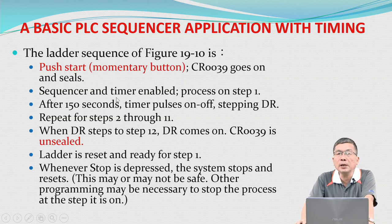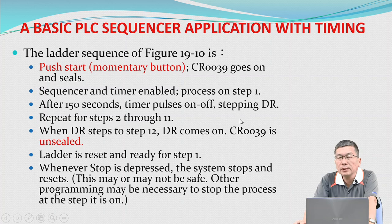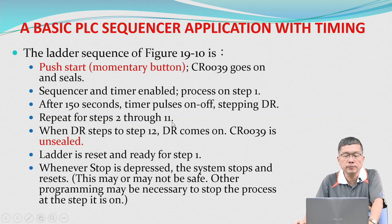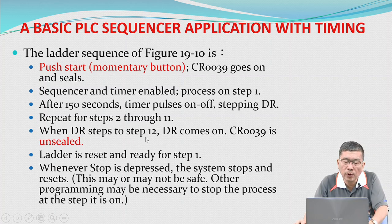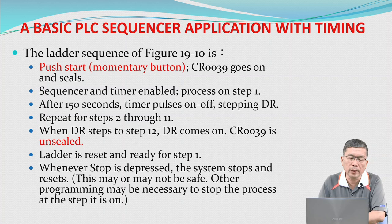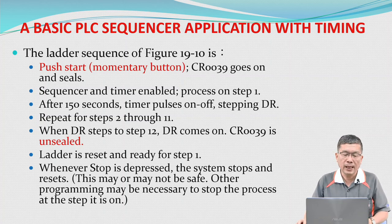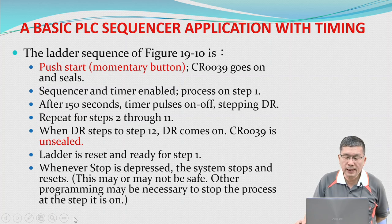Sequencer and timer enabled. Process on step 1. After 150 seconds, timing process on and off, step in DR. Repeat for steps 2 through 12. When DR steps to step 12, DR comes on, CR 39 is unsealed, timer is reset and ready for step 1. Whenever stop is depressed, the system stops and resets. Other programming may be necessary to stop the process at the step it is on.